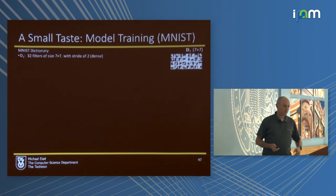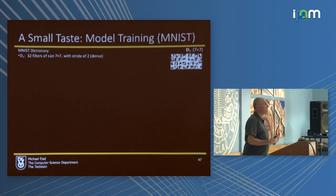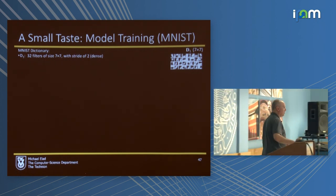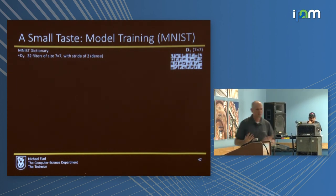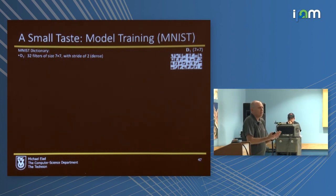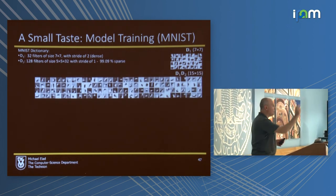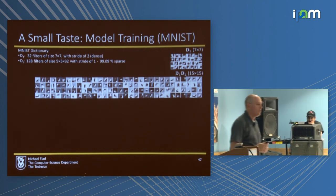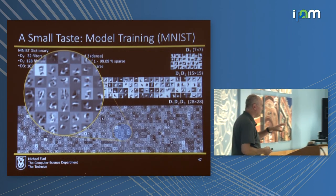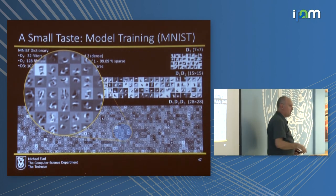To give an illustration, we went to the MNIST database and looked at the dictionaries D1, D2, D3. These are the 32 filters generating D1 — sort of edge detectors: horizontal, vertical, diagonal. D2 itself is boring and cannot be shown directly. But D1 times D2 shows elongated edges — we are starting to build molecules. When we go to D1·D2·D3, you start to see complete digits. So your digit in MNIST could be a linear combination of atoms, a linear combination of molecules, or a linear combination of those combined filters.